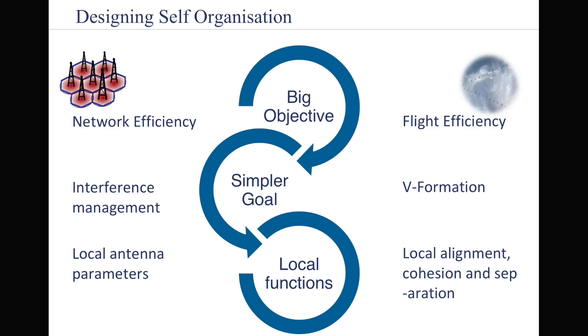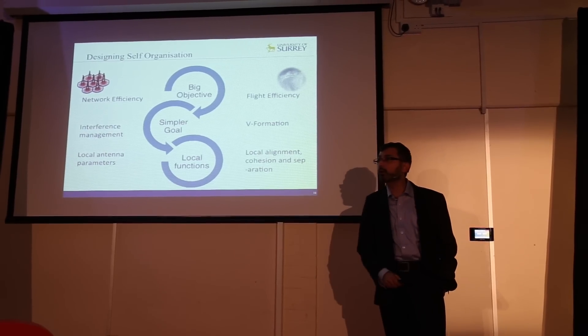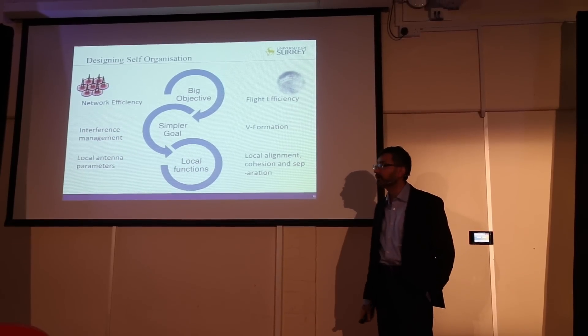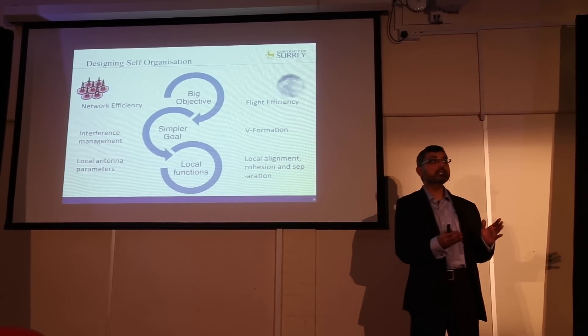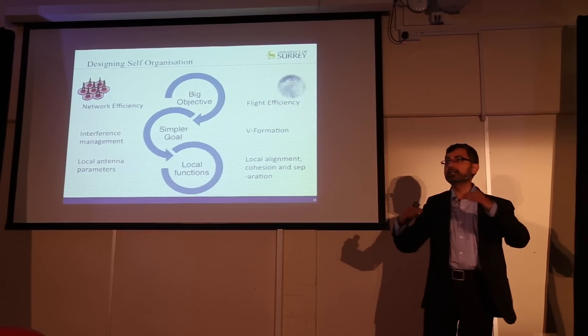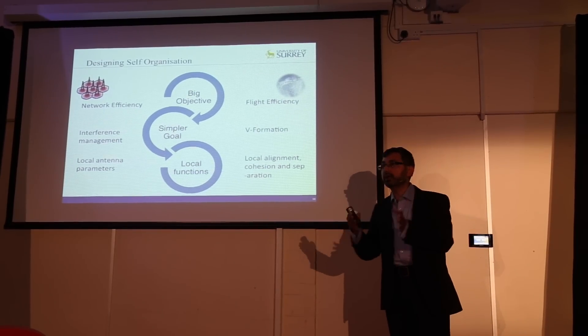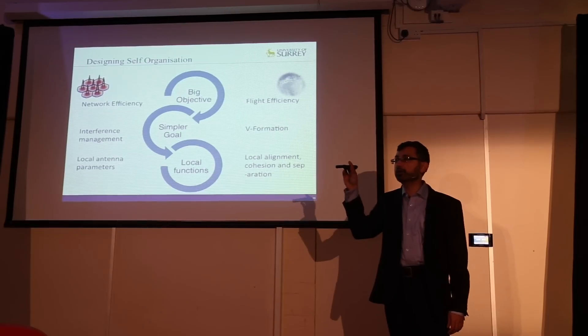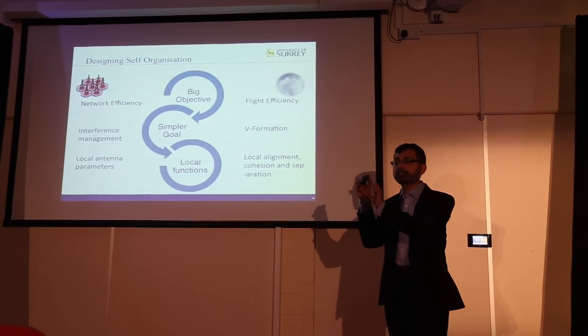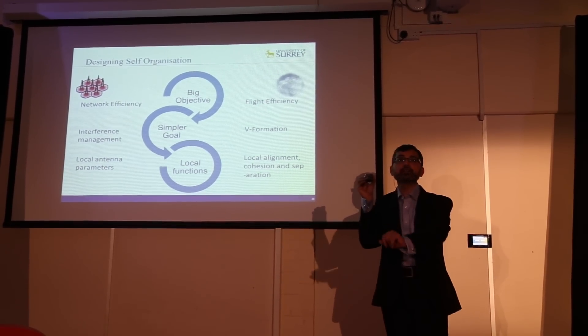And in a cellular system, this big objective can be the improvement in the network efficiency, can be achieved by a simpler goal of interference management and that interference can be managed by controlling the antenna tilts and antenna angles. It's just like controlling the angle of a torch in order to make sure that it shines on the place where the light is needed.